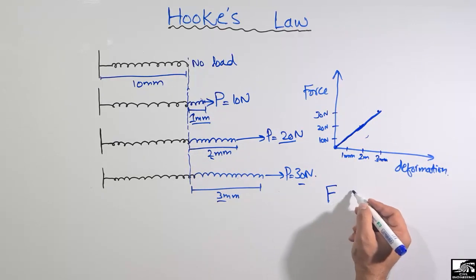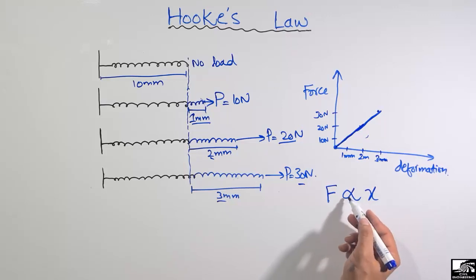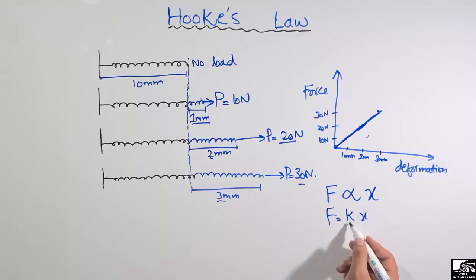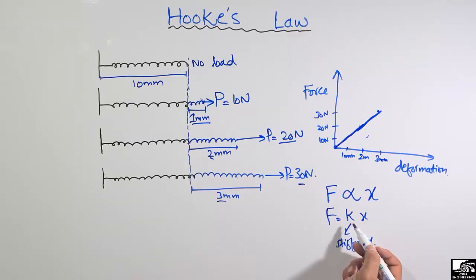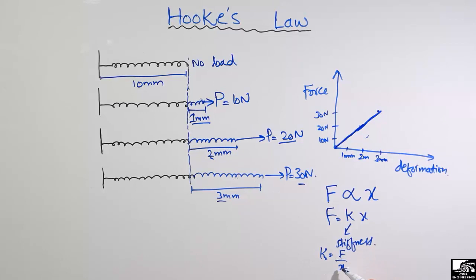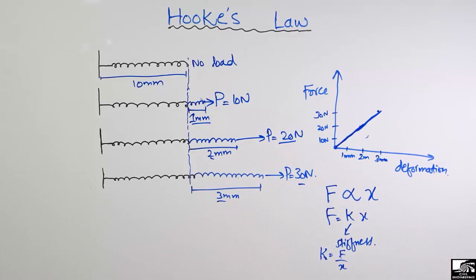This law states that force is directly proportional to deformation x, where x is the deformation in the material. To remove the proportionality sign, we introduce a constant K, called the stiffness of the material. The stiffness K equals force divided by deformation: K = F/x. The more force required to produce a given deformation, the stiffer the material. Stiffness is the property that indicates how much force is needed to deform a material.